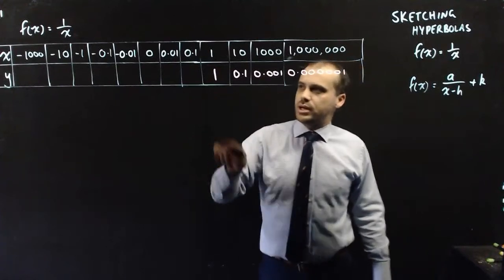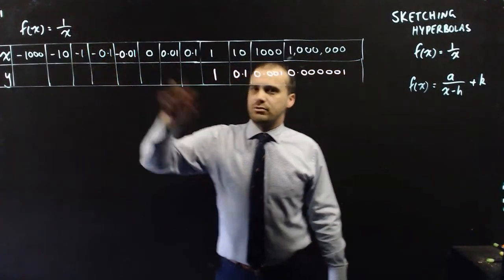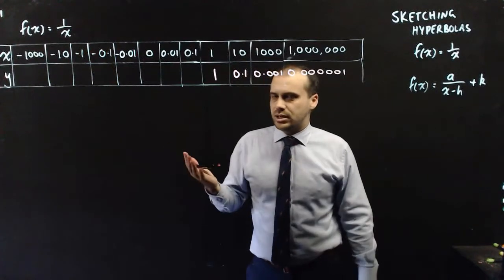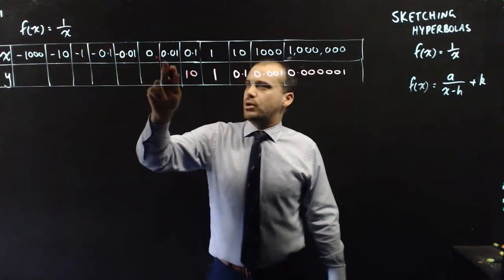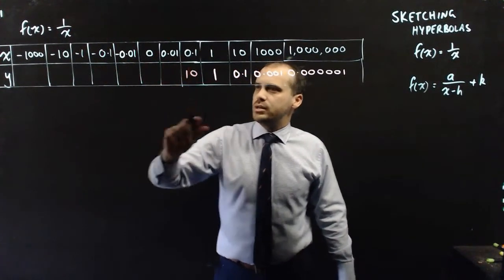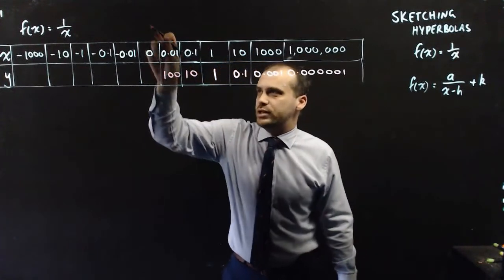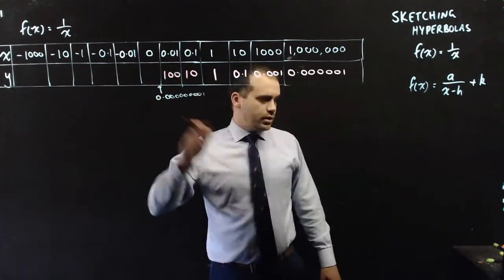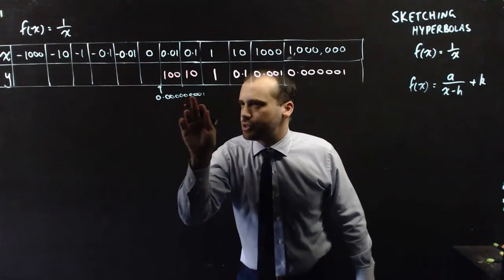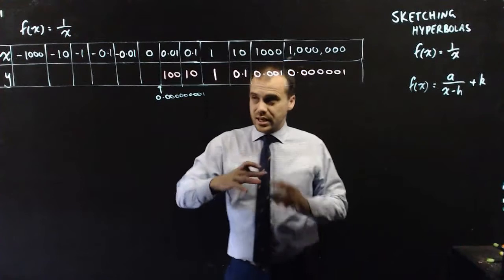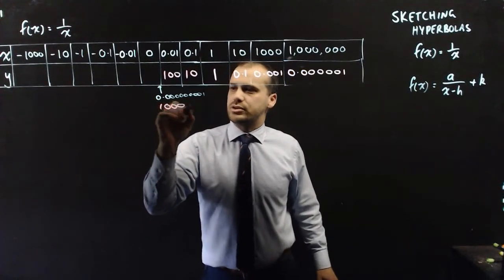Let's look the other way. 1 divided by 0.1 gives you 10. 1 divided by 0.01 gives you 100. If we did 1 divided by 0.00000001, we're going to get a huge number — a 1 with that many zeros after it. It's going to be huge.